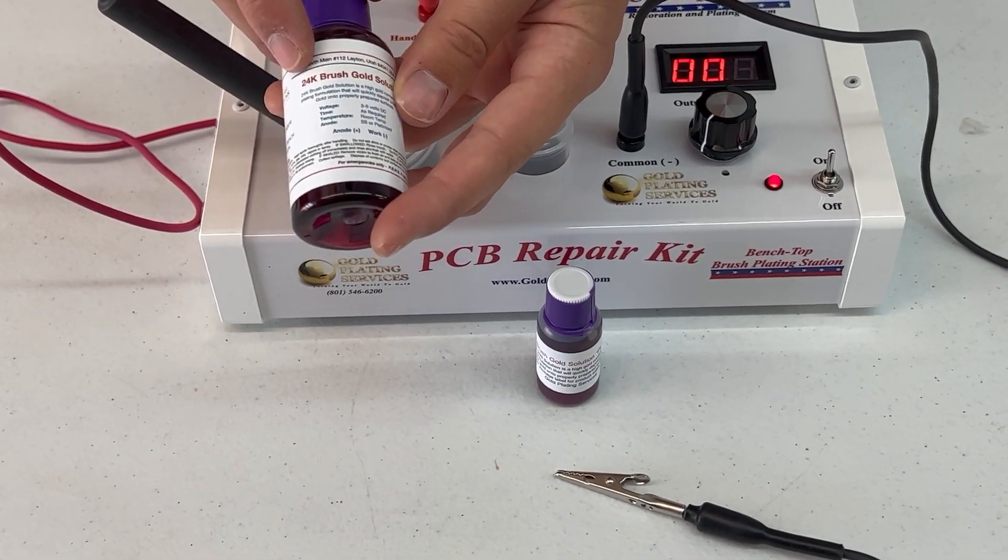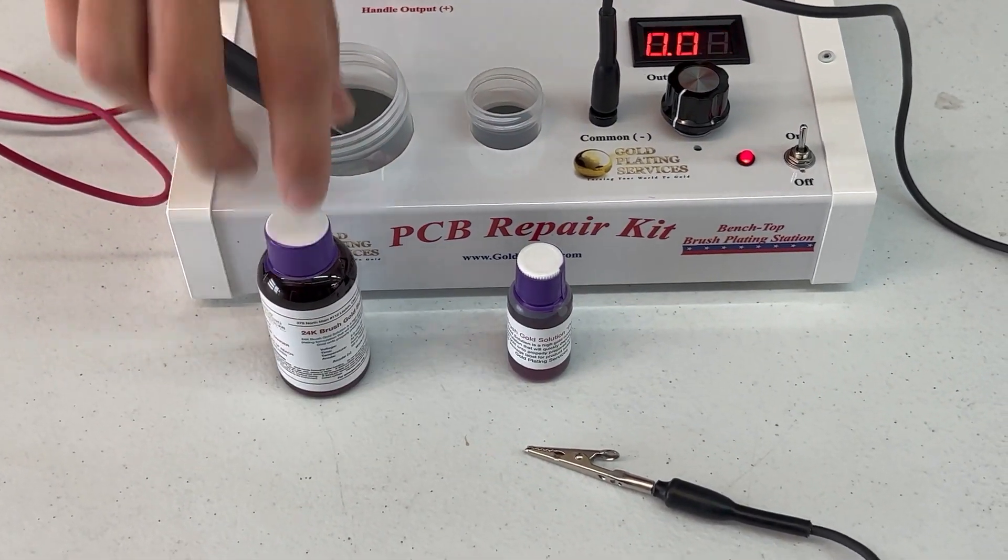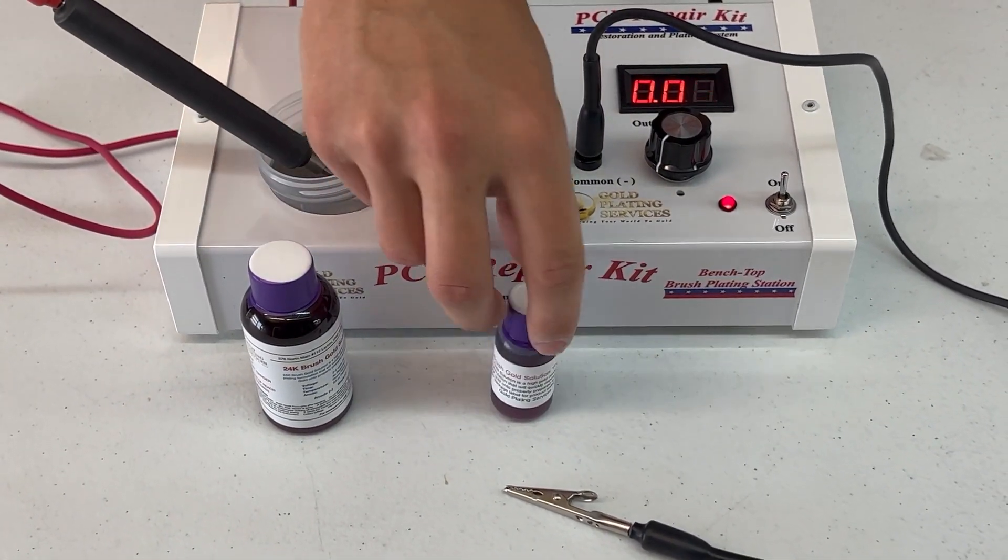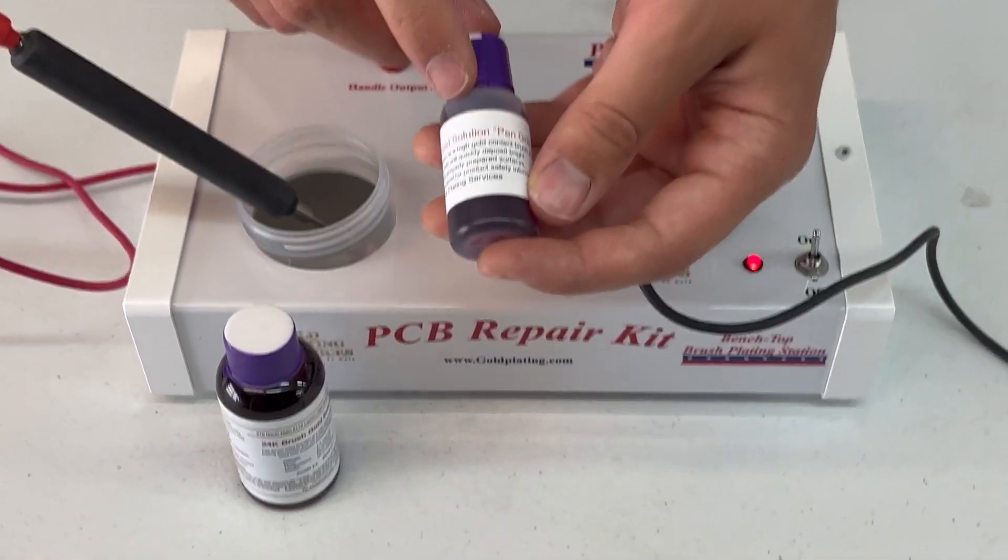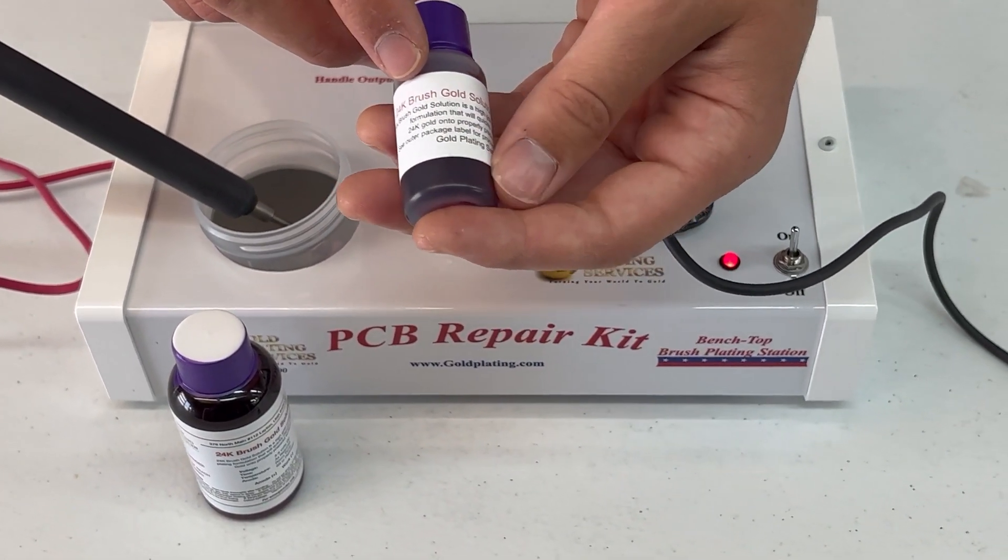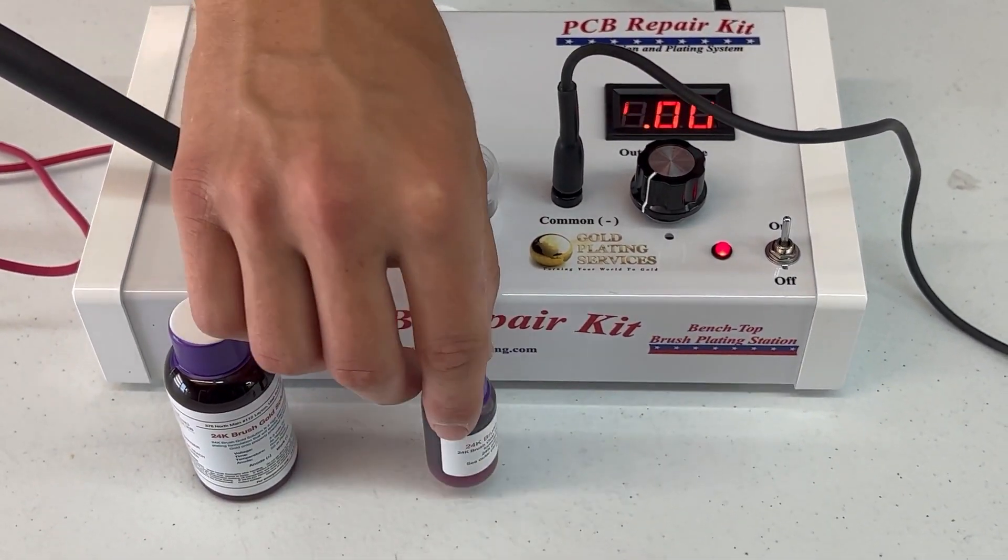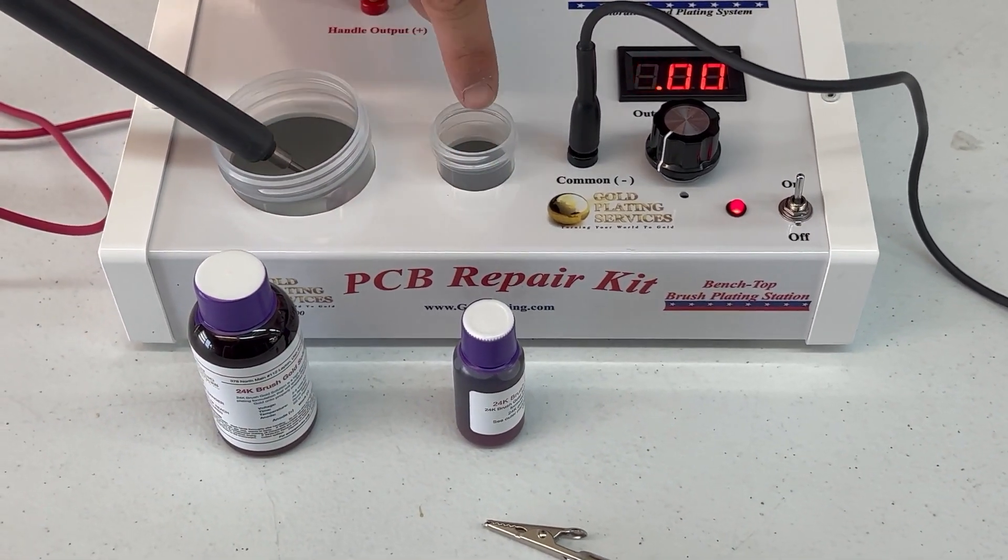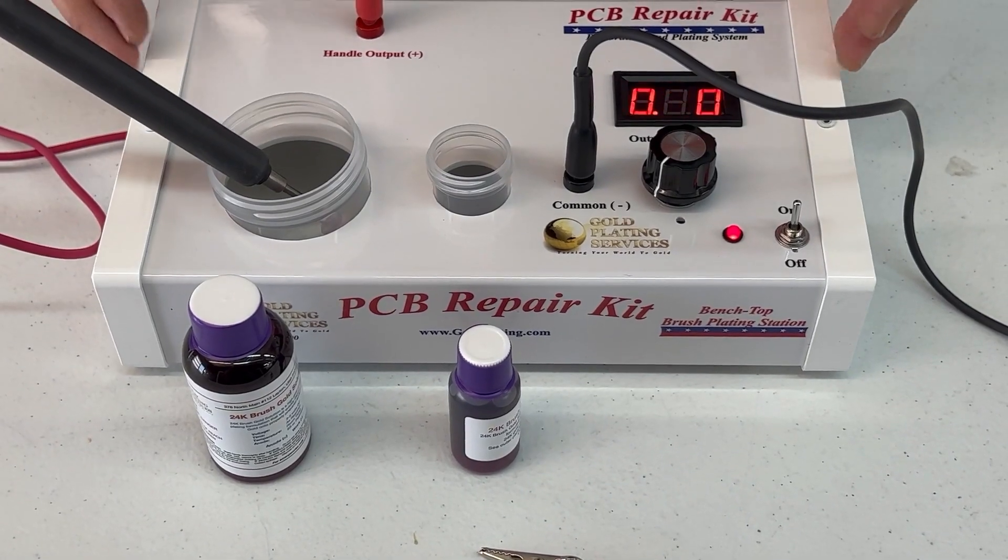All right, so we will put this two ounce 24k brush gold solution into your four ounce jar. And you can put your fine plating gold, your 24k pen gold, also known as the pen gold, into this one ounce beaker. And that is when you can start your plating.